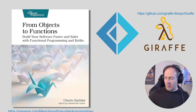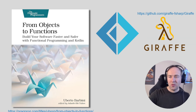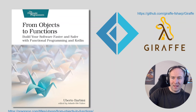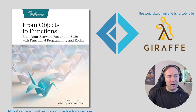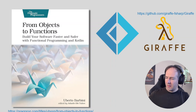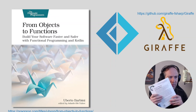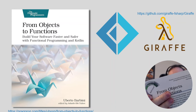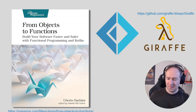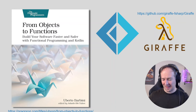Before we do that, let me shout out this book: 'From Objects to Functions — Build Your Software Faster and Safer with Functional Programming and Kotlin' by Uberto Barbini. It's a great book — expert level, from Pragmatic Programmers — but don't worry, I'm here to guide you along.